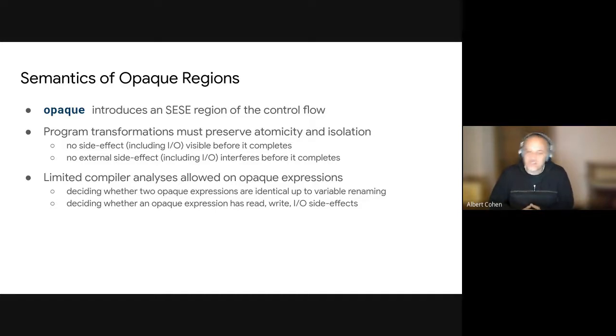So atomicity and isolation, so this is pretty obvious. You don't want transformations to intersect some I/O or some effects in the middle of such a region and vice versa. And beyond that, you also want the compiler analysis to be limited in what they can do about the opaque expression. So they can figure out what variables are used, they can figure out whether an opaque expression has side effects or has I/O effects. But it's not authorized for a compiler to go beyond that. It's not, for example, possible for a compiler to figure out the exact side effects of an opaque expression. On the other hand, the compiler can decide the fact that two opaque expressions are identical. And that's it. There's basically nothing else the compiler can do.